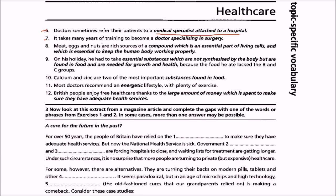Seventh: it takes many years of training to become a doctor specializing in surgery. We will call this person a surgeon, because surgery is a treatment of disease which requires an operation to cut into or remove part of the body. Do not confuse this with 'surgery' which also refers to the room or building where a normal doctor sees their patients.